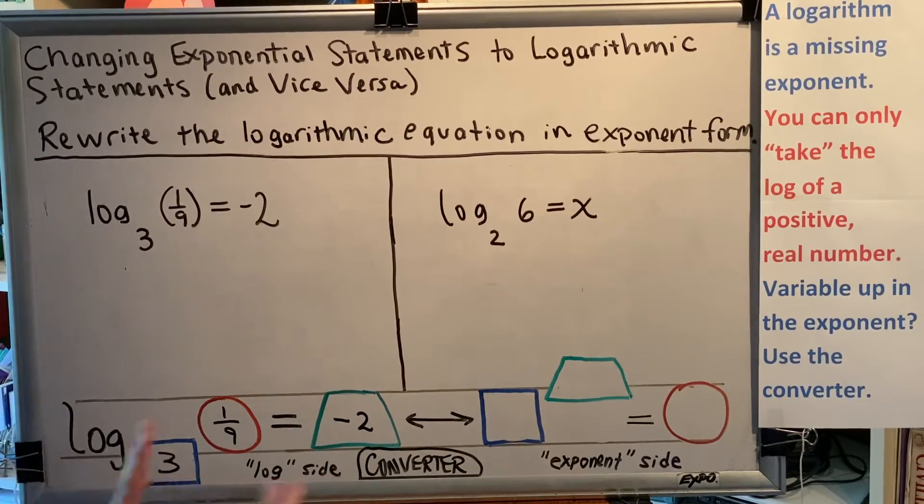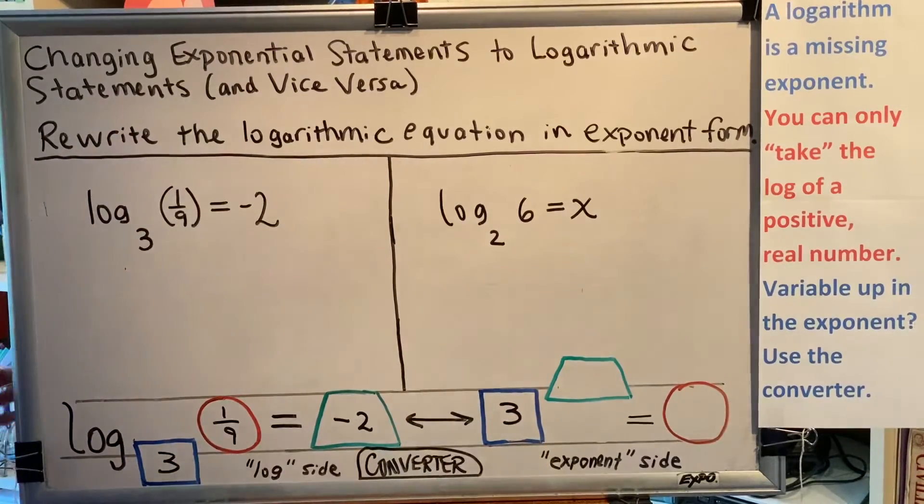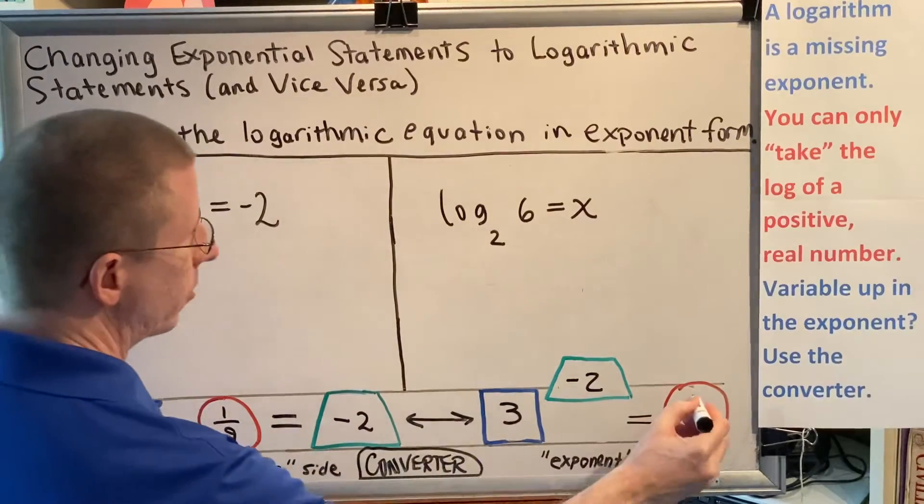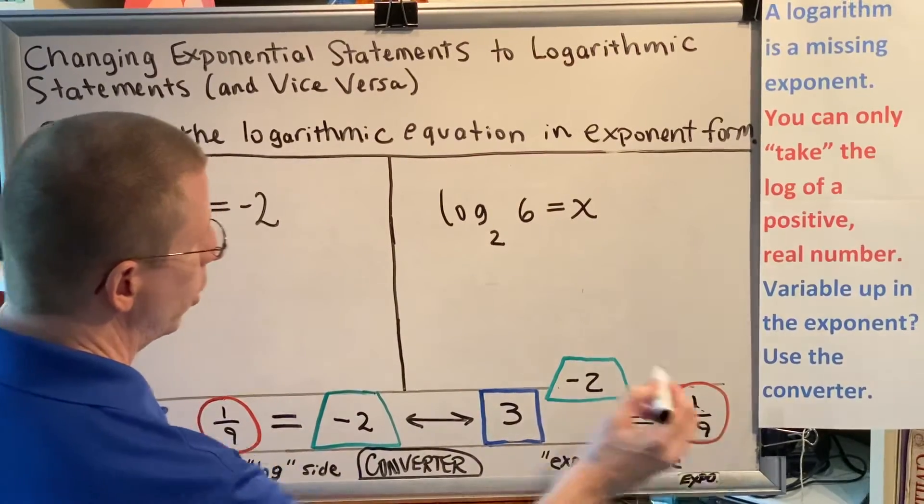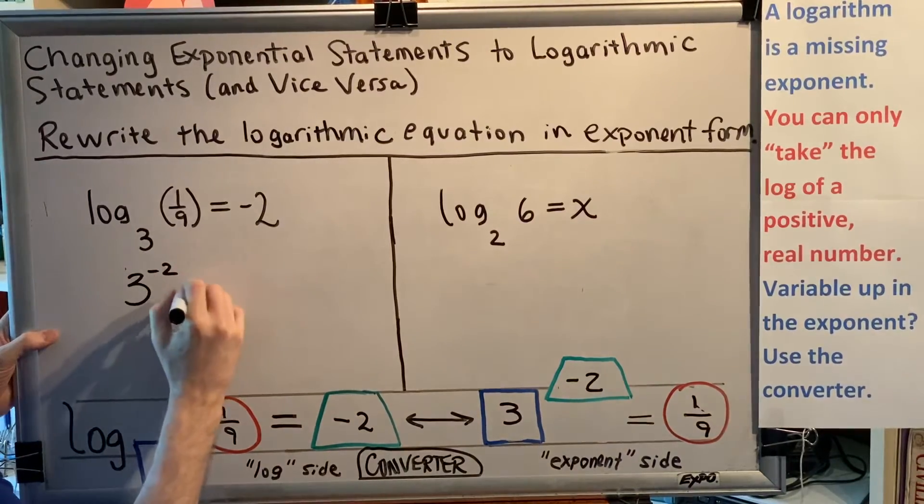Now match up the colors and shapes. If there's a 3 in the blue box on the left, there needs to be a 3 in the blue box on the right. Similarly, this green trapezoid needs a negative 2, and this red circle needs 1/9. So we get the exponential statement 3 to the negative 2 power equals 1/9.